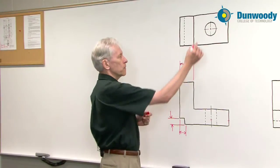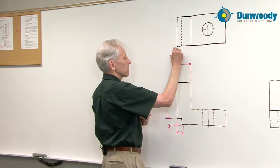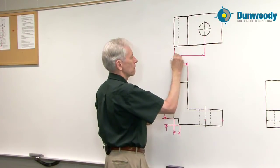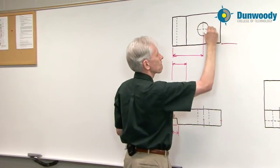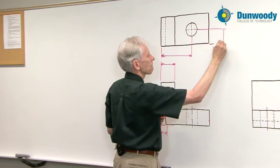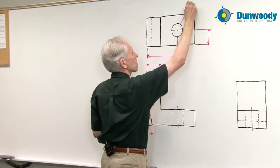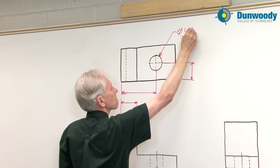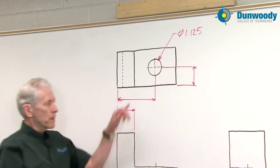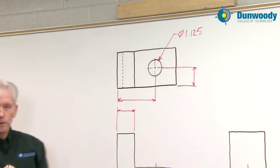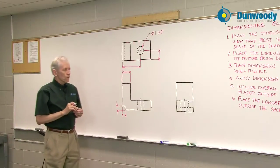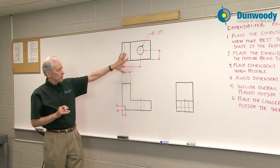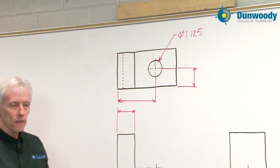Now, to dimension this hole will require two dimensions. Two dimensions to locate the hole and a third dimension to give the size. So one guideline that I don't have up here but it applies is holes always require two locating dimensions and a size dimension.